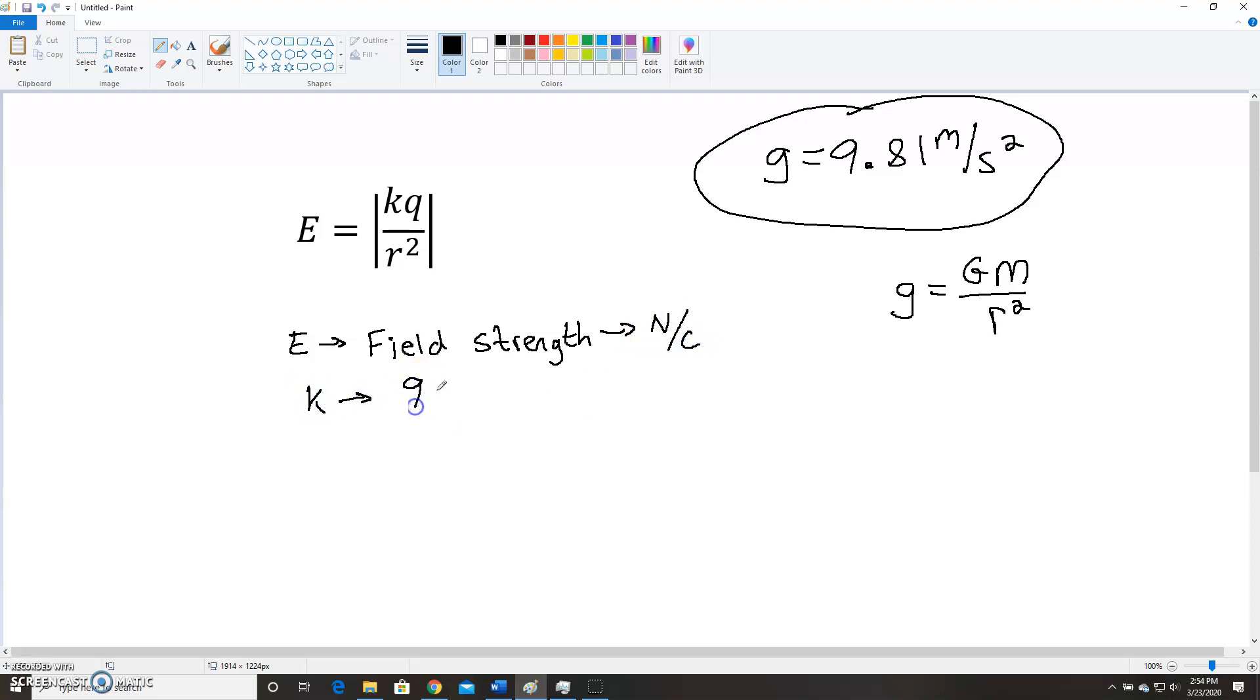K, once again, just like last time, is 9 times 10 to the 9th. Q is our charge measured in coulombs. And r is your distance from that charge, which will make sense in just a moment.